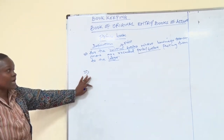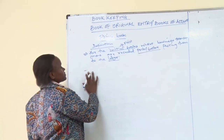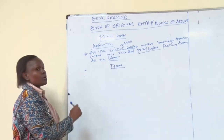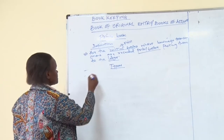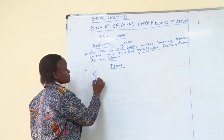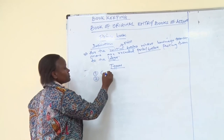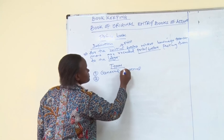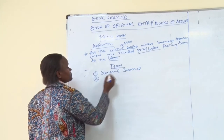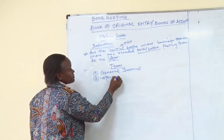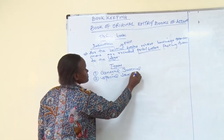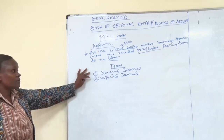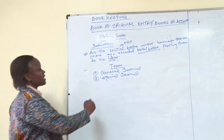Now I want us to look at the types of books of original entry. We have two main types: we have the general, and we have the special. Last time we learned about the general; today I want us to look at the special journals.